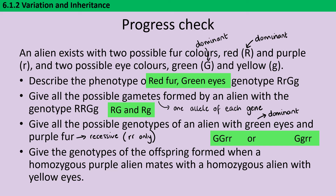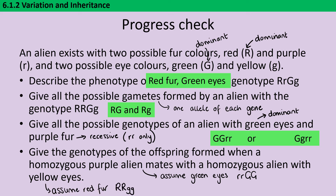In this final question, we're thinking about mating. As we said, if a particular trait hasn't been mentioned, we assume the alien is wild type and that will be the dominant trait. So our homozygous purple-furred alien, we assume it has green eyes, and our homozygous yellow-eyed alien we assume has red fur. Our purple alien is therefore homozygous recessive for fur colour and homozygous dominant for eye colour, while our yellow-eyed alien is the reverse. When those two aliens have offspring, they produce an F1 generation that is all heterozygous for both genes.